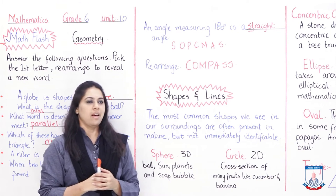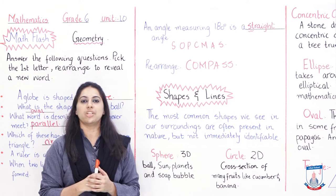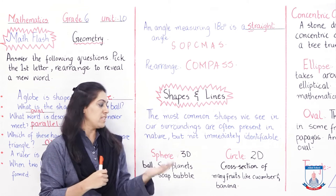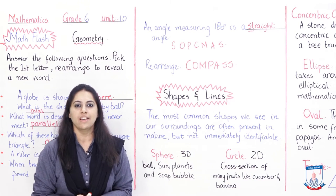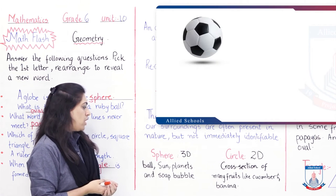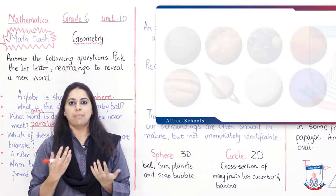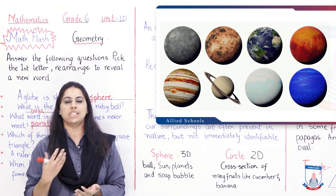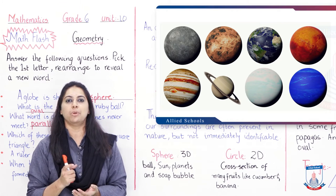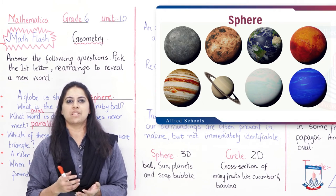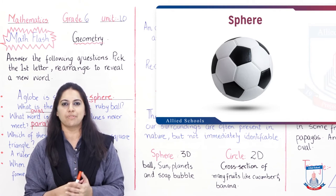There are many shapes found in nature that we cannot easily identify. The first shape is sphere. Sphere is a 3D shape, and many things made from or resembling a sphere are found in nature - such as balls, planets, and bubbles. If you've seen planets on TV or computers, their shape is a sphere, just like a football.